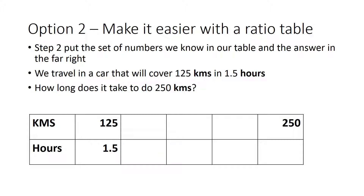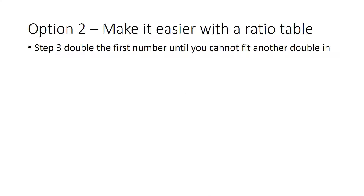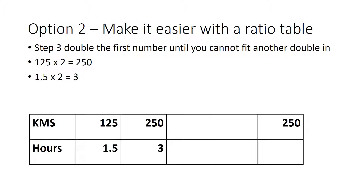Step three: we're going to double these numbers until we get to a point where we can't fit another double in. The first double is 125 times 2, and we're straight there — 250. Whatever you do to one number, you do to the other, so we double 1.5 as well, which gives us 3. That gets us to the answer: three hours.